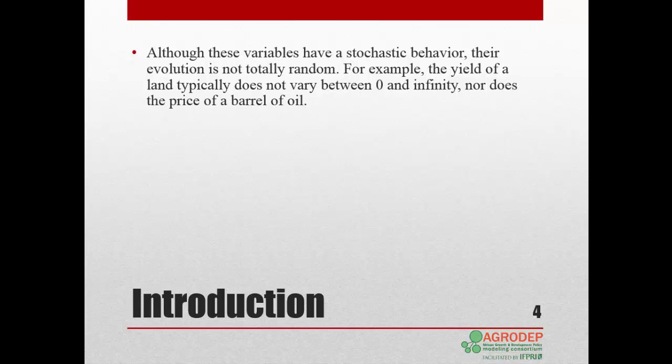When values of exogenous variables or parameters are uncertain, we can model their behavior as stochastic or random. But their evolution is not totally random. For example, crop yields typically do not vary between 0 and infinity, nor does the price of a barrel of oil.